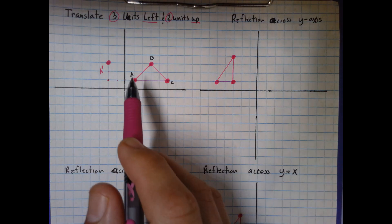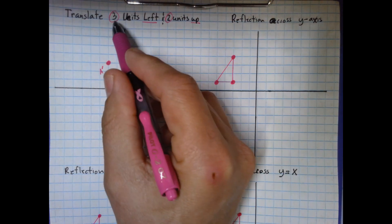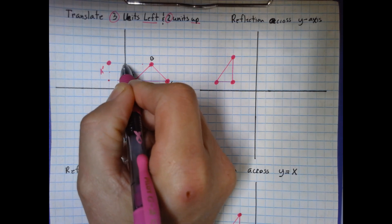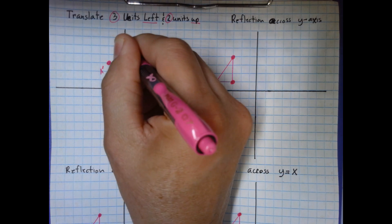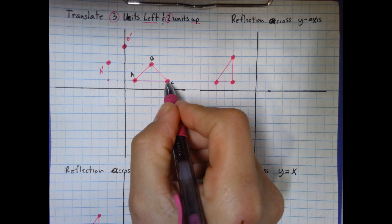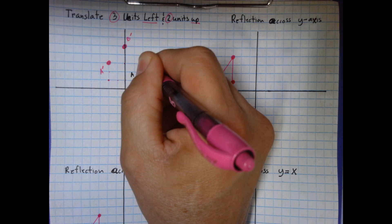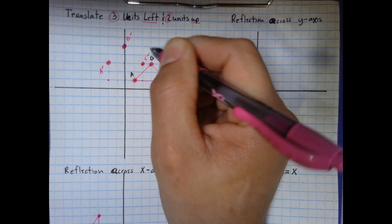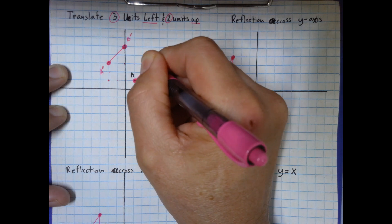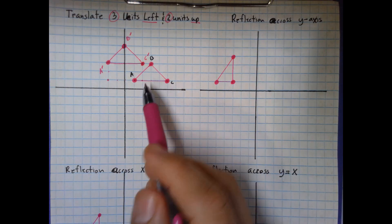Translation is the easiest transformation. If it says move left, go left; right, go right; down, go down; up, go up. I'll do the same for B — three units left, one, two, three, and two units up, one, two — place B prime. Then for C, three units left, one, two, three, and two units up, one, two — place C prime. Now I connect the dots.